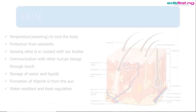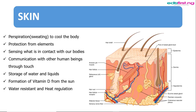The skin is the largest sense organ and contains general receptors. The skin performs many functions, including perspiration — sweating to cool the body — and protection from external elements, so that nothing can just enter our body uninvited. The skin also senses what is in contact with our bodies; when someone touches you, it is the function of the skin that lets you know.